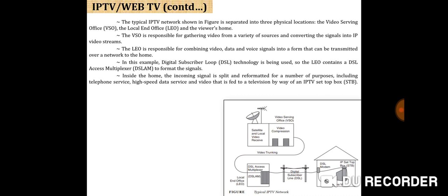Typically, the IP TV network is separated into three physical locations: the Video Serving Office (VSO), the local and central office. The VSO is responsible for gathering video from a variety of sources and converting the signals into IP video streams. The local office is responsible for combining video data and voice signals into a form that can be transmitted over a network to the home. In this example, DSL technology is used, so the local office contains a DSL access multiplexer to format the signals. Inside the home, the incoming signal is split and reformatted for telephone services, high-speed data service, and video that is fed to a television by way of an IP TV set-top box.